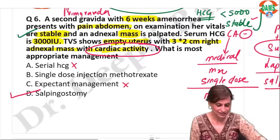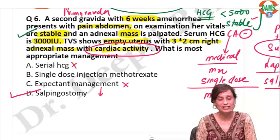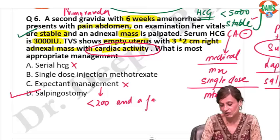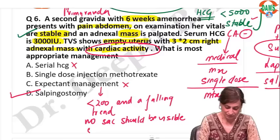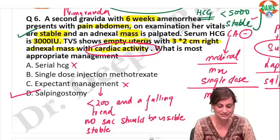For expectant management, the HCG value has to be less than 200 with a falling trend. No sac should be visible. The patient has to be hemodynamically stable.